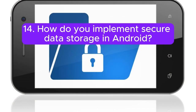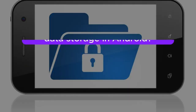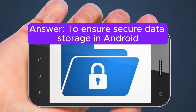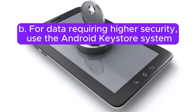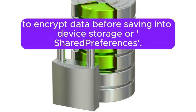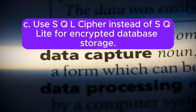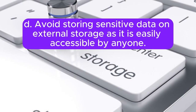Question 14: How do you implement secure data storage in Android? Use SharedPreferences with private mode to store sensitive data other apps should not access. For data requiring higher security, use the Android Keystore system to encrypt data before saving to device storage or SharedPreferences. Use SQLCipher instead of SQLite for encrypted database storage. Avoid storing sensitive data on external storage as it is easily accessible by anyone.